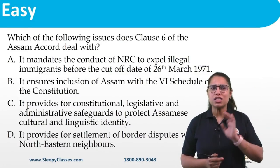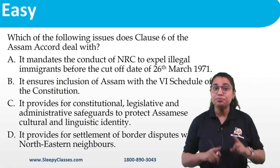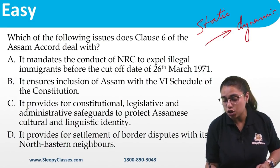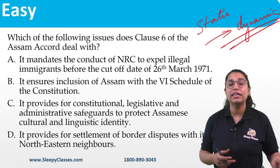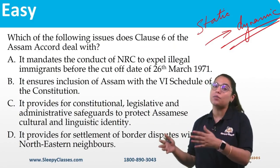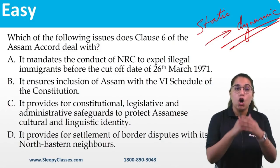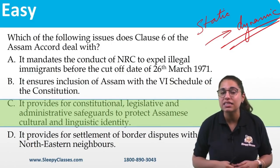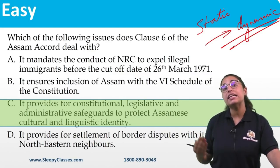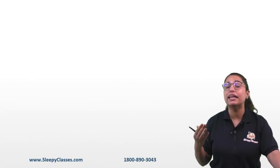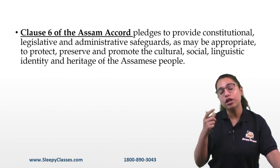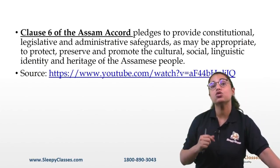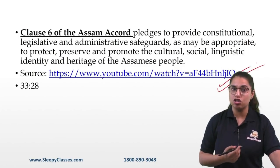Next is also an easy-level factual question that links static knowledge to current affairs. The question was about Clause 6 of the Assam Accord (1985). The correct answer is option C: constitutional, legislative, and administrative safeguards to protect the cultural and linguistic identity. In fact, the MB-based Barua Committee was set up in 2019 to look into measures to implement Clause 6.